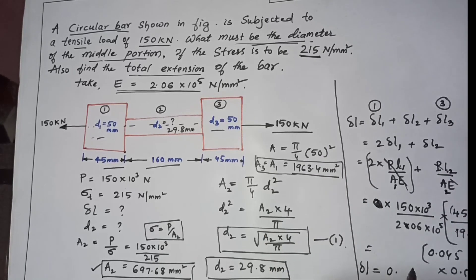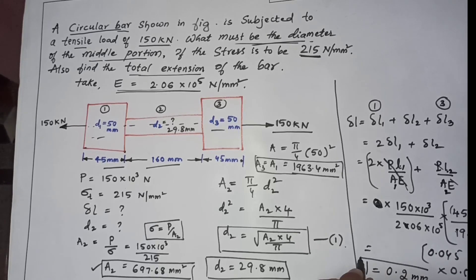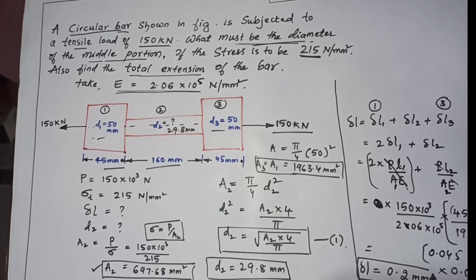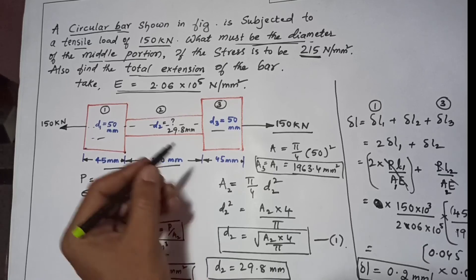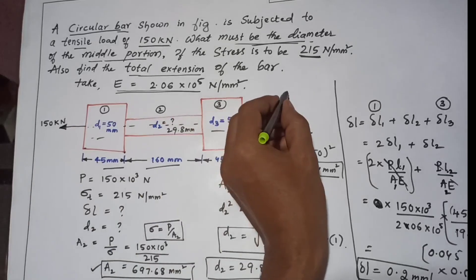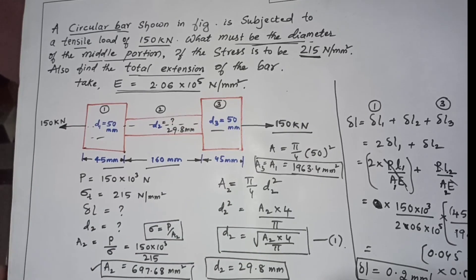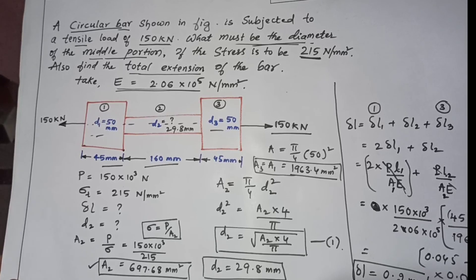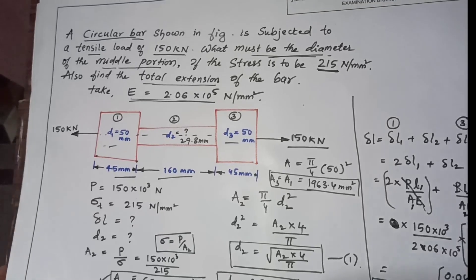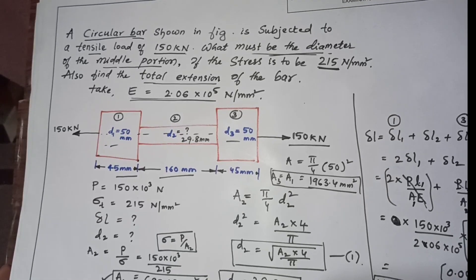The total extension delta L is 0.19 mm, which we can approximate as 0.2 millimetres. Hope you understood this problem. Thank you.